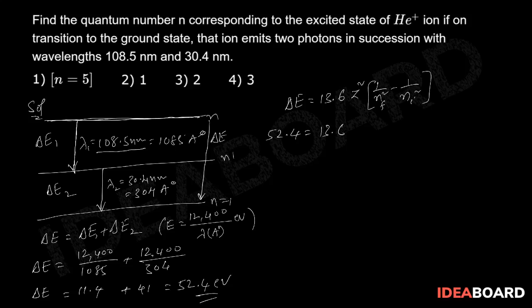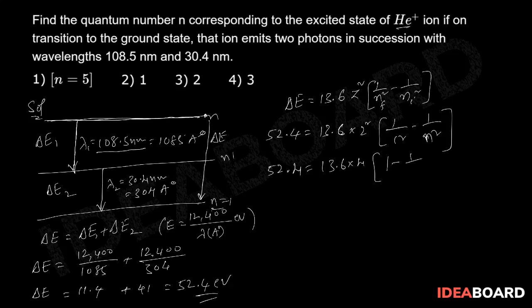For helium plus ion, the atomic number Z = 2, so Z² = 4. The transition goes from the nth state to ground state nf = 1. Substituting: 52.4 = 13.6 × 4 × (1/1² − 1/n²), which gives 52.4 = 54.4 × (1 − 1/n²).